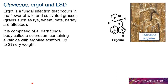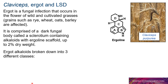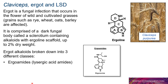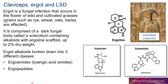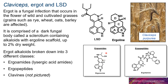There are three classes of ergot alkaloids: the ergoamides, the ergopeptides, and the clavines, which are not pictured because they lack one or more of the functionalities that result in psychedelic properties. LSD resembles the ergoamides — we have the amide functional group here — and the ergopeptides also have that amide functionality, which is very important for their pharmacology.